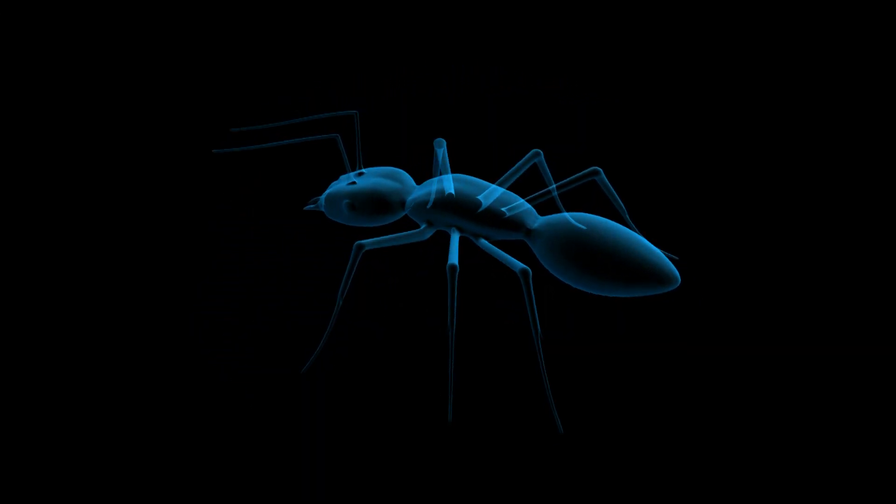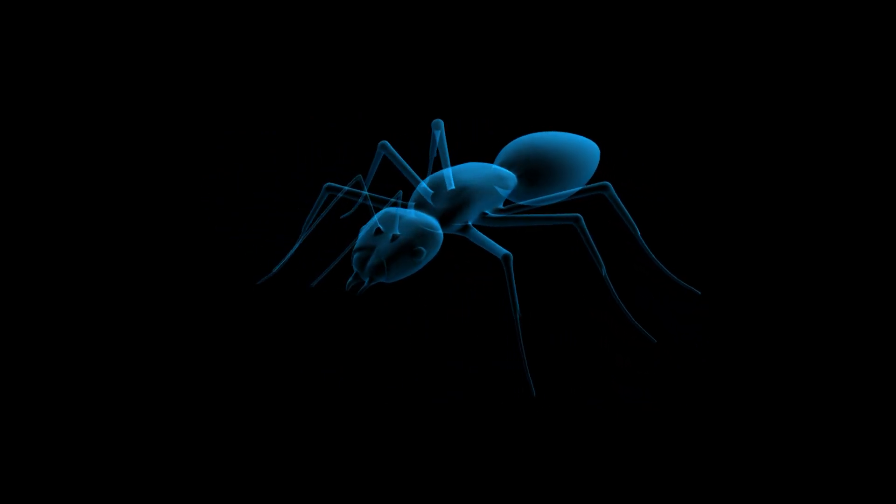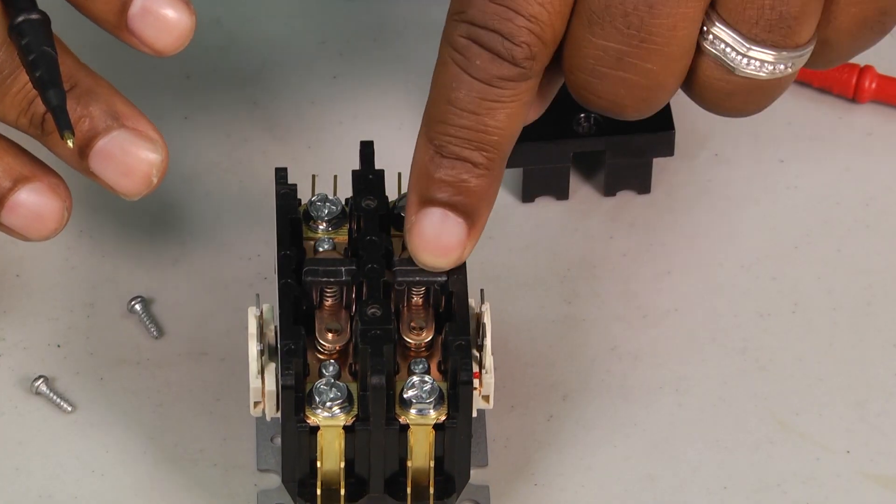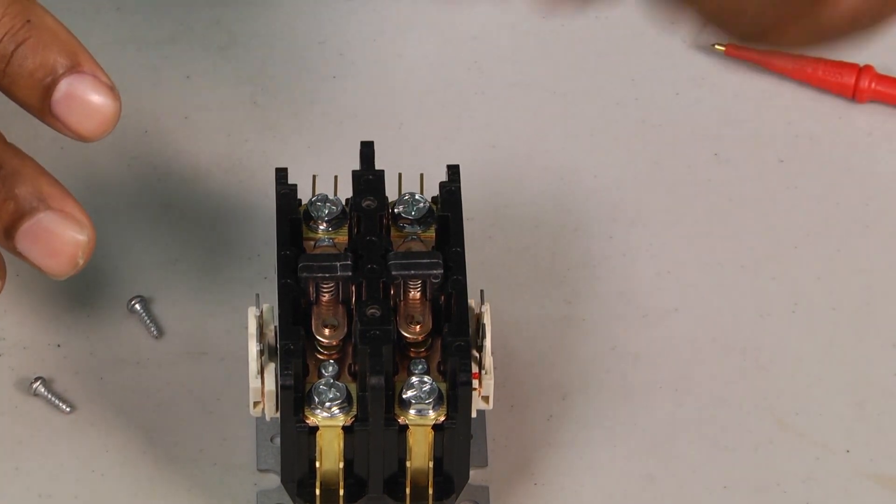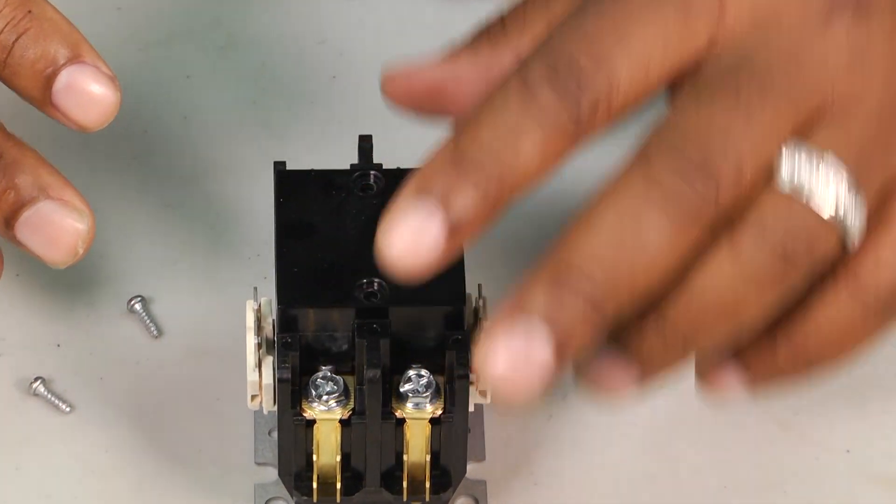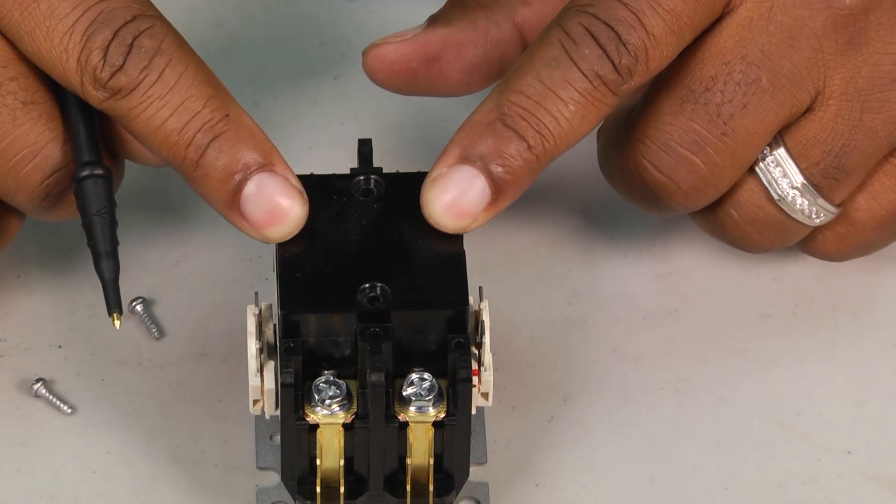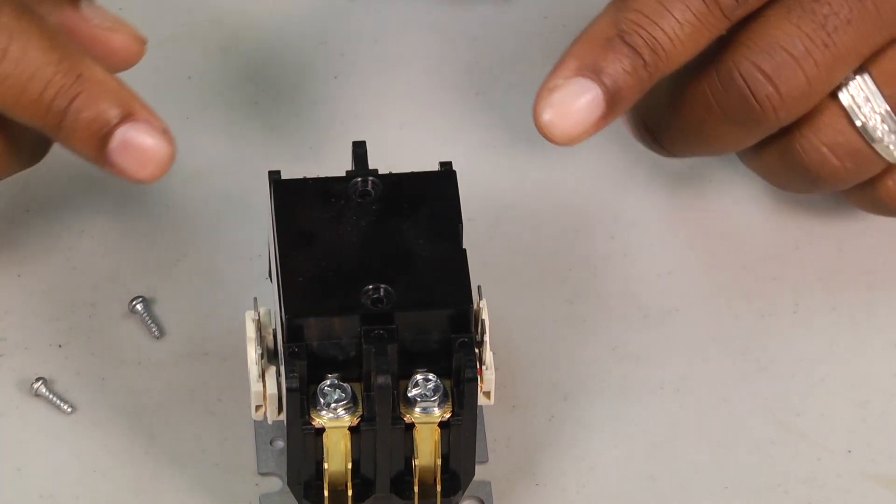They crawl in there, and then those ants build up, and the ants get in between the contacts, and the contacts cannot make contact. That's why it's a good thing to have this little protective device on there to keep ants from getting inside your contactor.